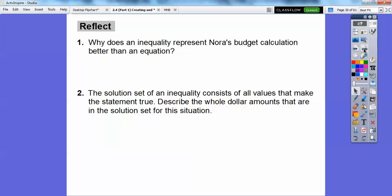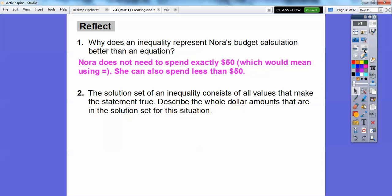So why does an inequality represent Nora's budget calculation better than an equation? Well, Nora does not need to spend exactly $50, which means that would mean we'd be using an equal sign if it was exactly. She can also spend less than that, so that's why it was less than or equal to the inequality.